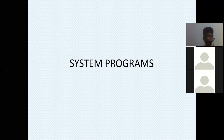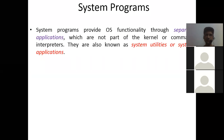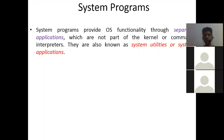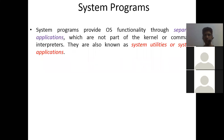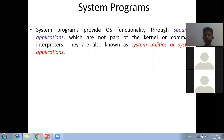System programs provide operating system functionality through separate applications which are not part of the kernel or command interpreters. They are also known as system utilities or system applications. You can think of them as the office superintendent of your faculty - they are not part of the core coordinator's functionality, but they can solve problems that are not essential. System programs can solve problems directly without the kernel.